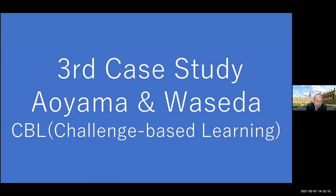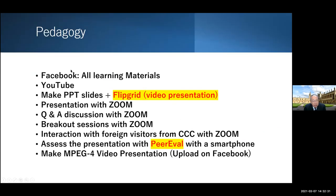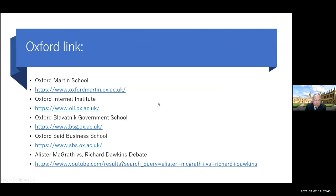The third case study is at AGU and Waseda — I've been teaching at Waseda for about 10 years. This is a sort of challenge-based learning, or CBL, which I applied to my classroom. Students have to download materials from Facebook. They have to make a sort of Flipgrid video. I also send links to Oxford — there is a famous link where each institute is doing the most advanced research. Even Oxford Martin School and Oxford Internet Institute — if you are keen on it, you can find many exciting things.